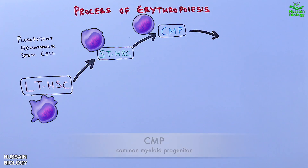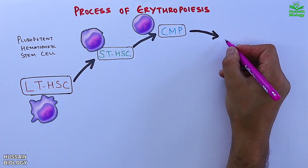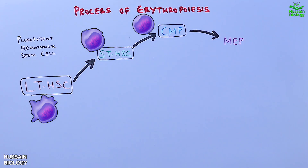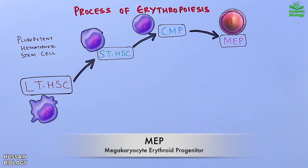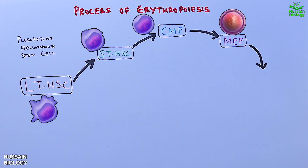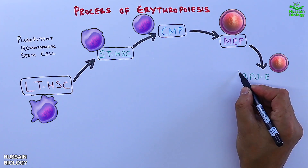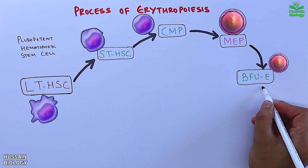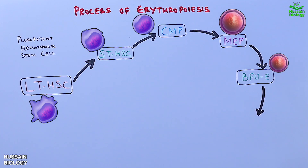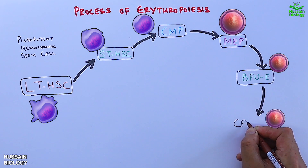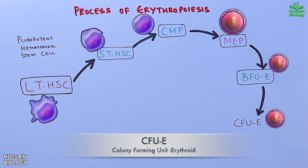This common myeloid progenitor cell differentiates into MEP, the megakaryocyte erythroid progenitor cell. This MEP then differentiates into BFU-E, the burst-forming unit erythroid, and this BFU-E differentiates into CFU-E, the colony-forming unit erythroid.